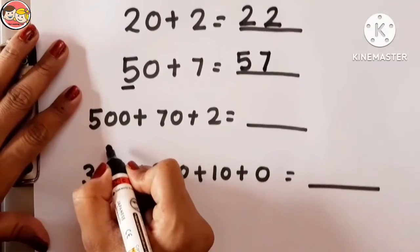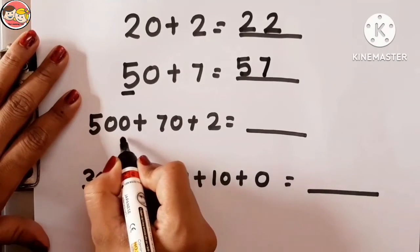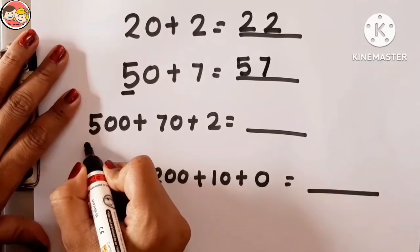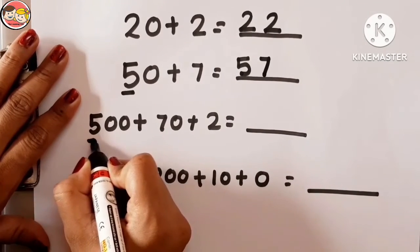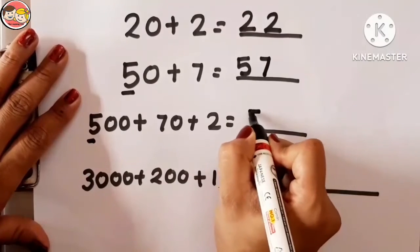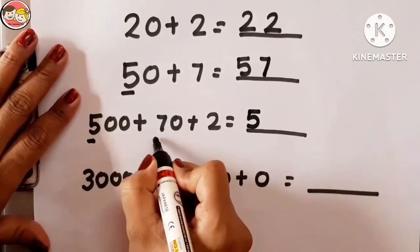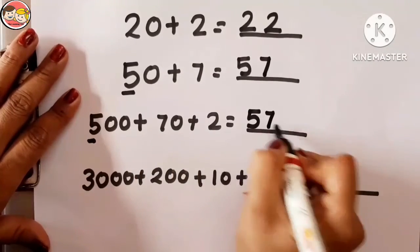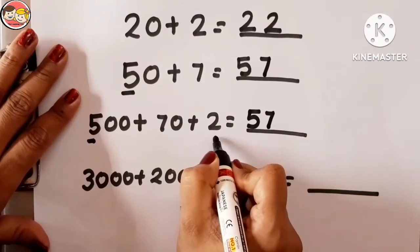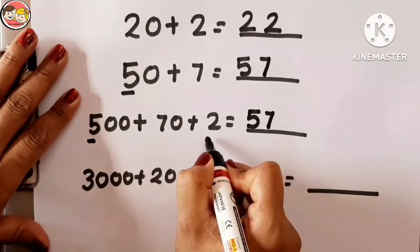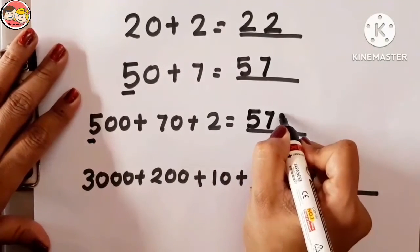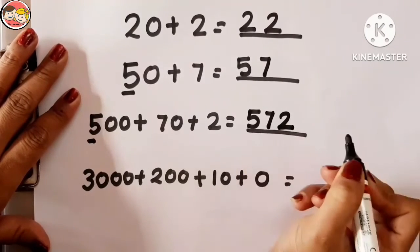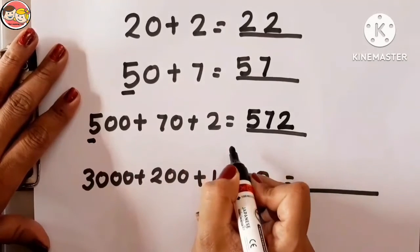Now look here: 500 + 70 + 2. How many hundreds are there? 5 — so write 5. How many tens? 7 — so write 7. How many ones? 2 — so write 2. So 572 is the short form of this expanded form.